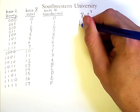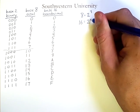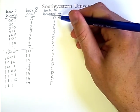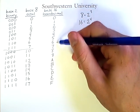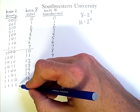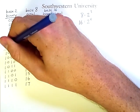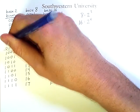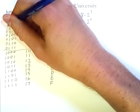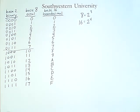Similarly, 16 is equal to 2 to the 4th, therefore each hexadecimal digit can be represented using exactly 4 binary digits, or bits. And if I pad these binary numbers with a 0 on the left, you can see this correspondence.